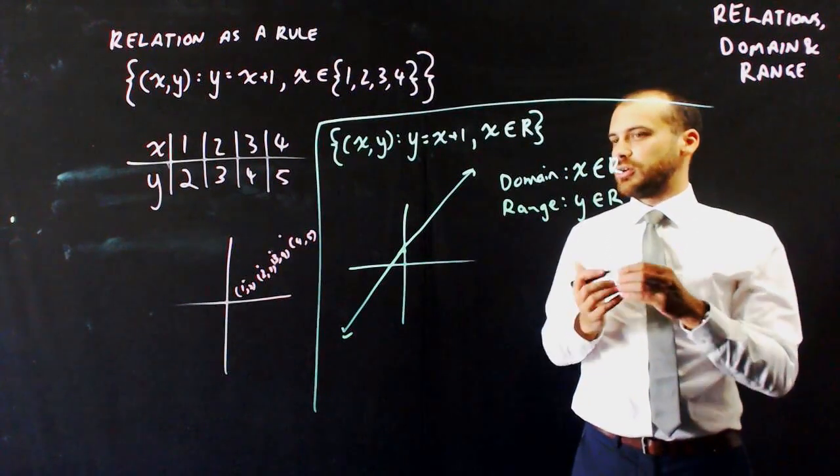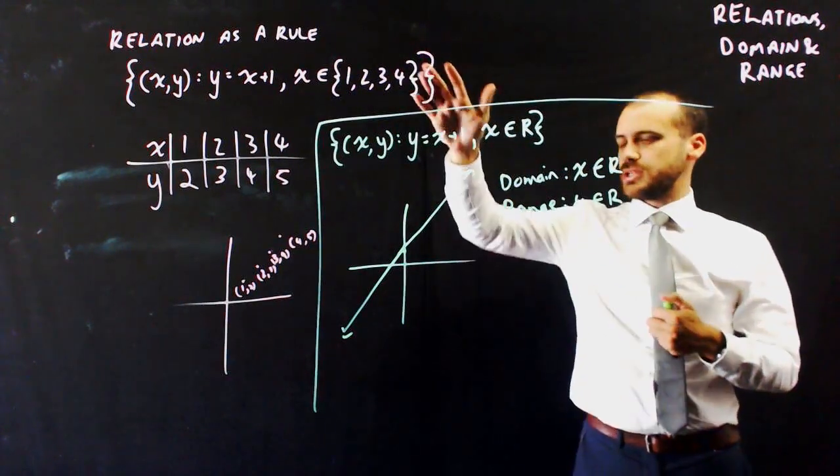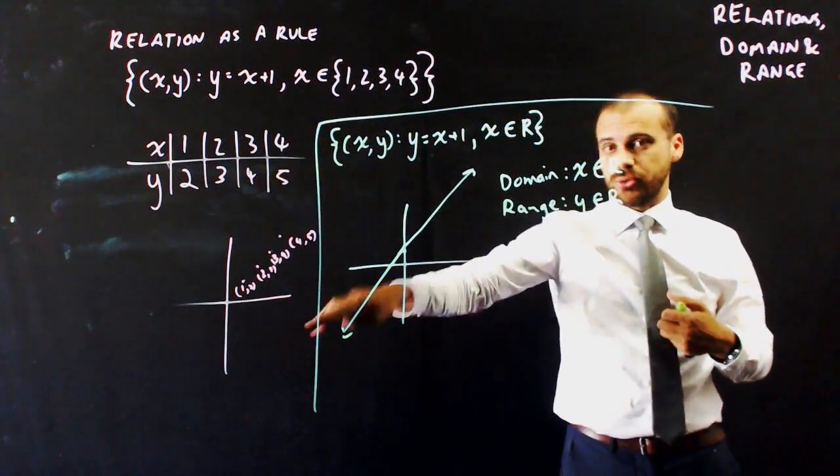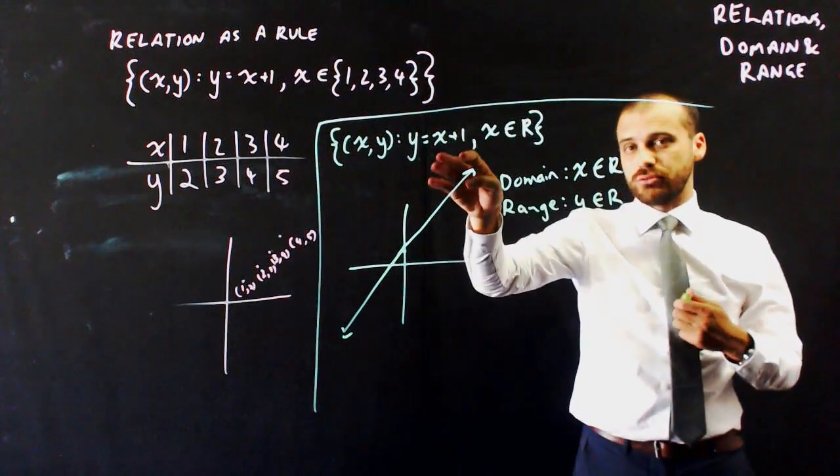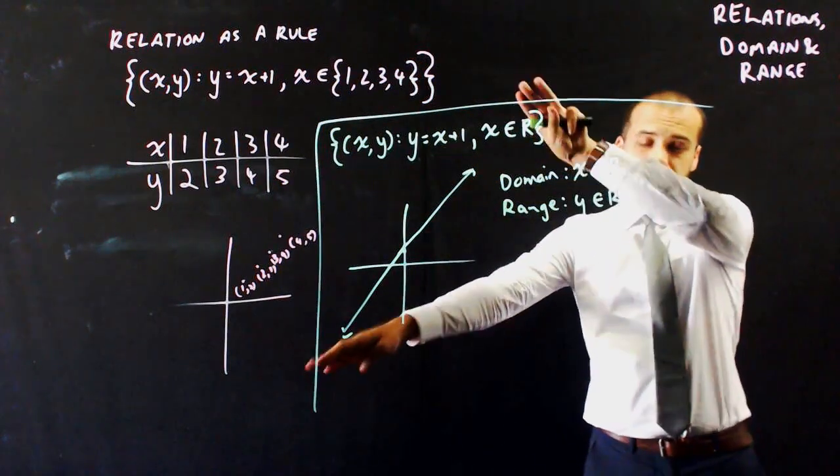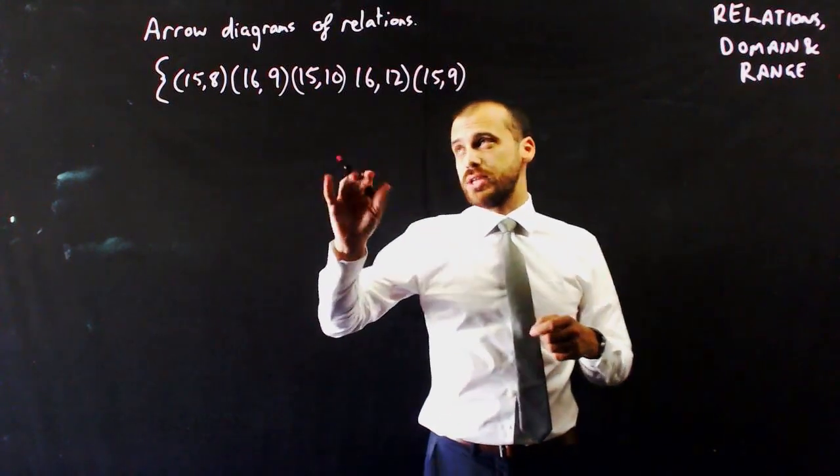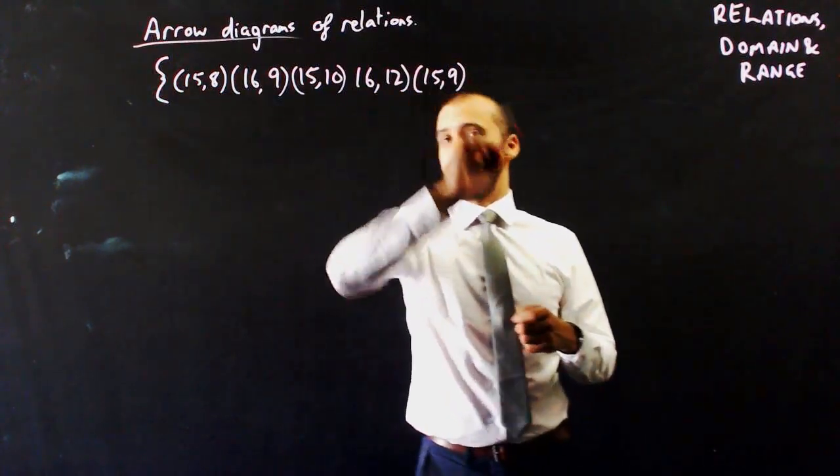Okay, so done a few things. We had an ordered set of pairs, we graphed an ordered set of pairs, we graphed a rule that created an ordered set of pairs, and we created a rule that created an infinite number of values, domain and range. Last thing I'm going to say about this is that we can represent this using something called an arrow diagram.